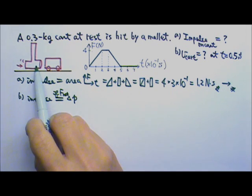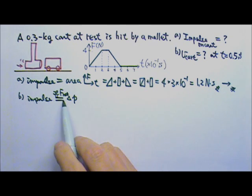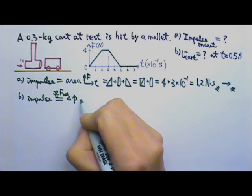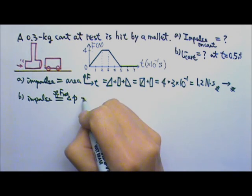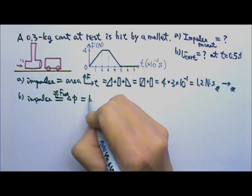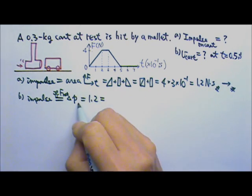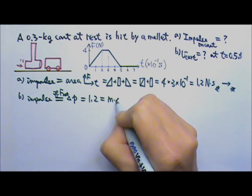And this force from the mallet on the cart is the net force on the cart. So this impulse equals the change in momentum. And the impulse is 1.2, and the change in momentum is M times delta V.